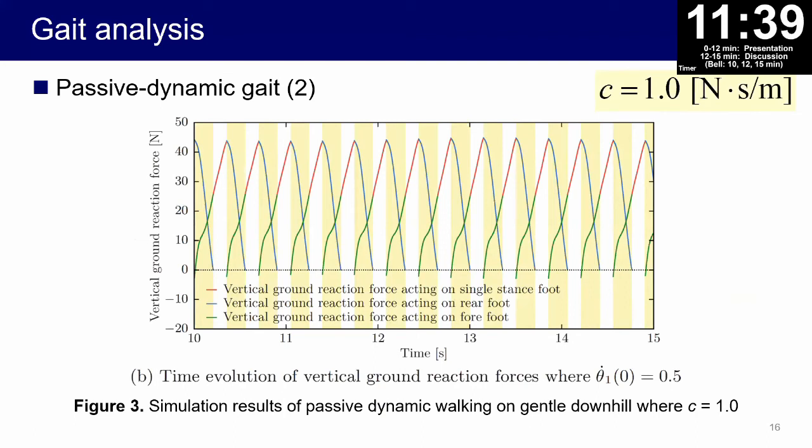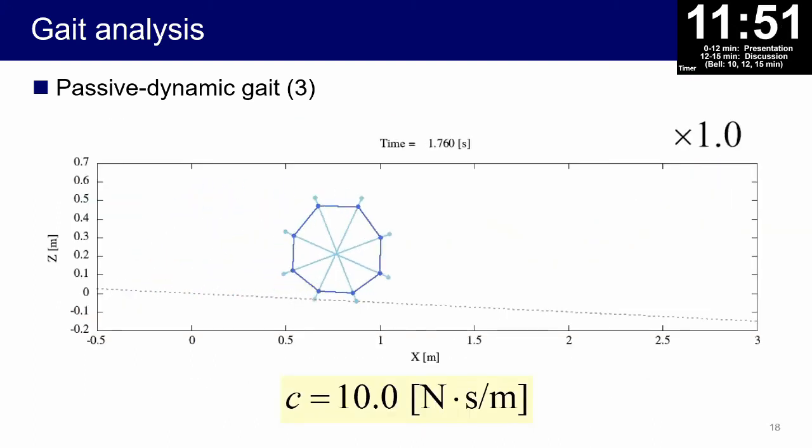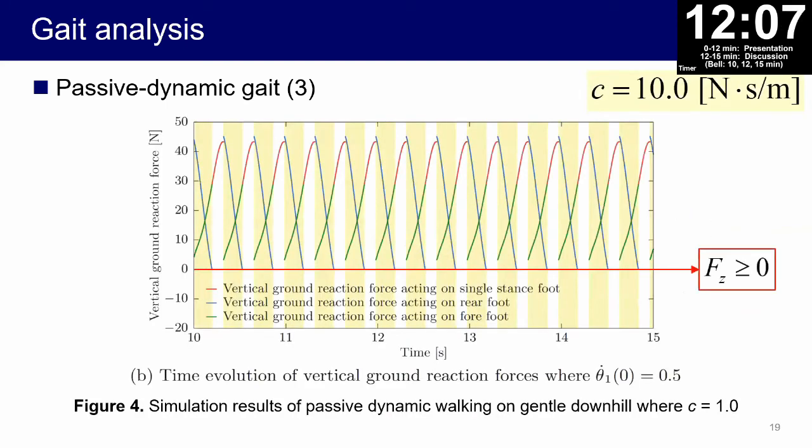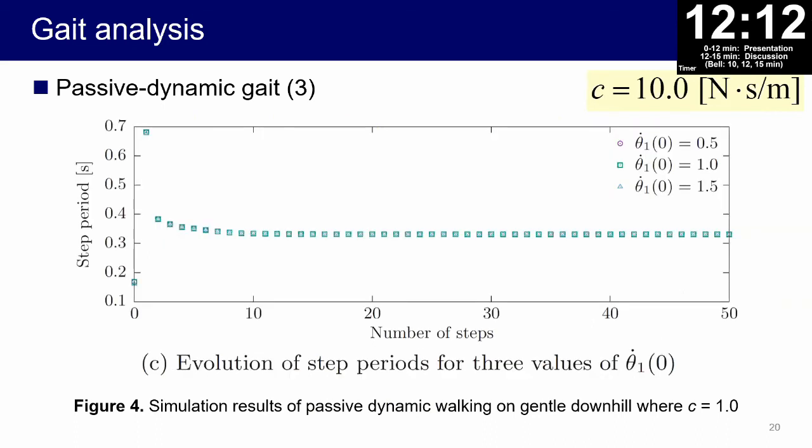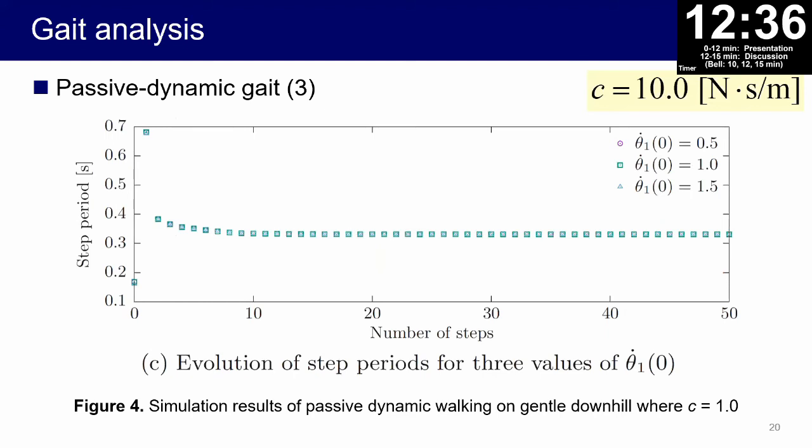We then increased the viscosity more. We finally set the viscosity coefficient to 10.0. We can see that the condition of unilateral constraint can be met during motion. Passive dynamic gait could be successfully generated according to the viscosity coefficient effect. Period one gait has been generated.